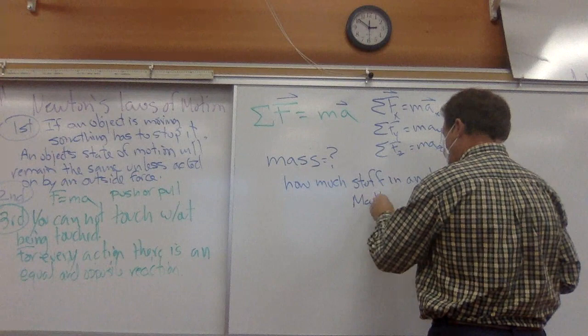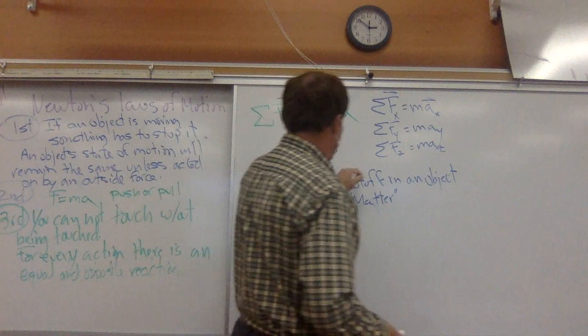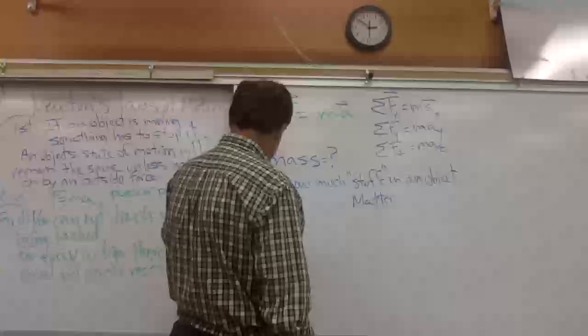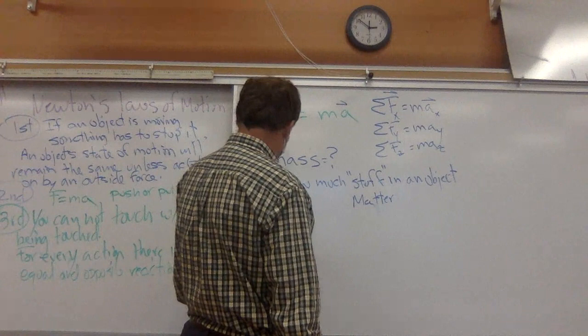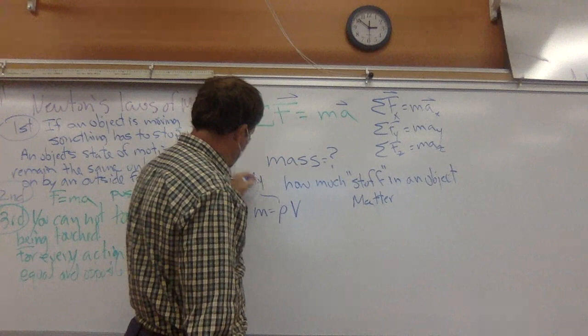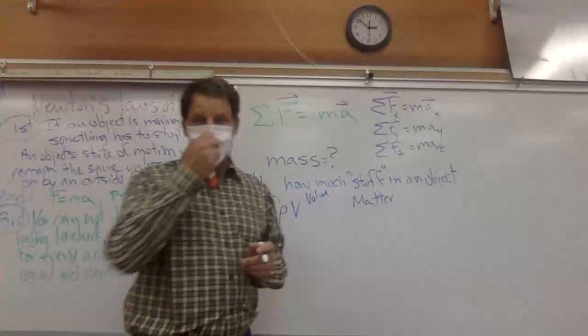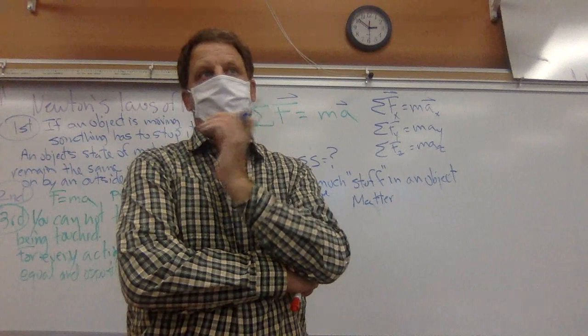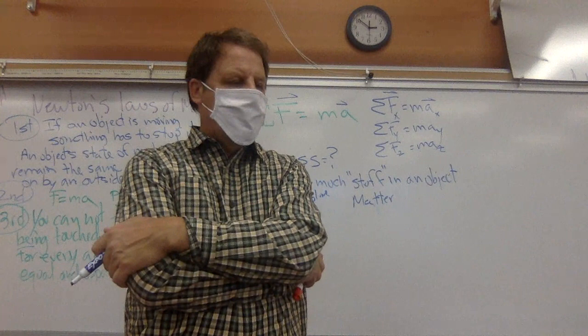To get a little more sophisticated, we should say mass equals density times volume. This helps us distinguish volume from matter. So here is a typical science-related riddle: which has more mass, a pound of feathers or a pound of lead? They're both the same amount of mass. But a pound of lead would be very small, and a pound of feathers would be very large.